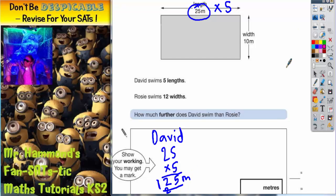Now we need to figure out how far Rosie swims. We'll use a different colour for that. Rosie is swimming 12 widths. A width is 10 metres, and she's going to do that 12 times.